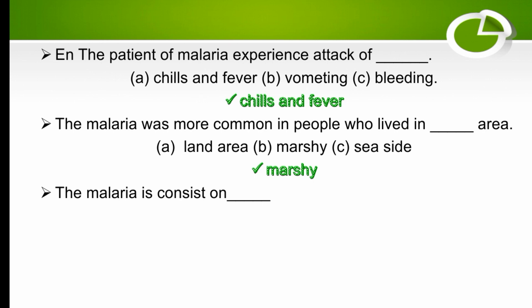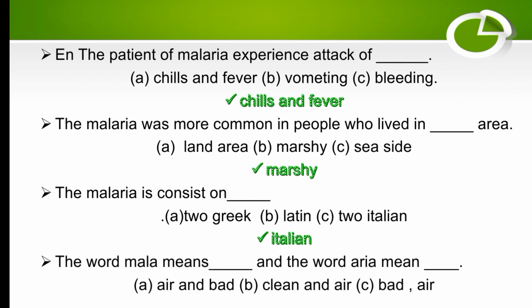The word malaria consists of which? The options are two Greek words, Latin words, or two Italian words. Malaria consists of two Italian words. The word 'mala' means bad and the word 'aria' means air, so the right option is C.